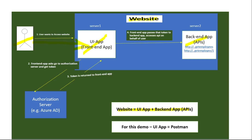Since we've added Azure AD authentication, the UI app will ask the user to authenticate against Azure AD. The user enters their email and password, and if authentication is successful, a token is returned to the UI app, which then passes that token to the back-end app. Indirectly, the user is accessing the APIs from the back-end app through the UI app.